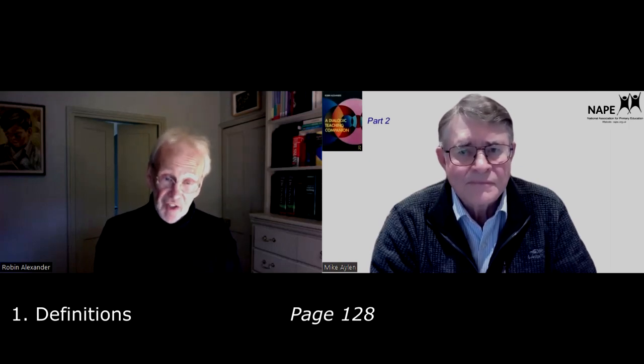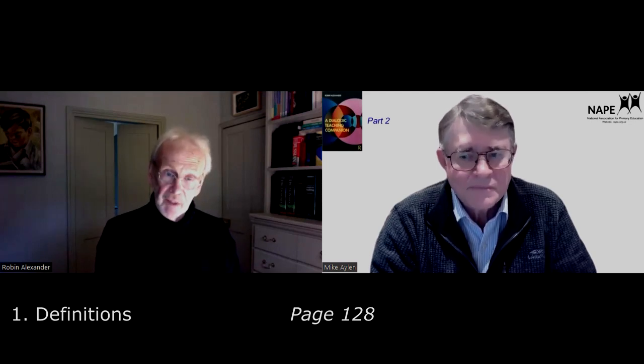The framework is, if you like, a total pedagogy. It tries to put talk about talk in some detail, identify its most important features, but also set it in the wider context of teaching. It has six segments. It starts with definitions — saying precisely what dialogic teaching is and what we mean by dialogue. The second segment is stance, which is the outlook, attitude, and values that underpin the whole thing, because education is always necessarily underpinned by values of some kind.